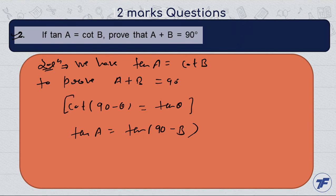when we have two trigonometric ratios equal, A equals 90 minus B. Therefore, A plus B equals 90 degrees, and this is how we prove it.